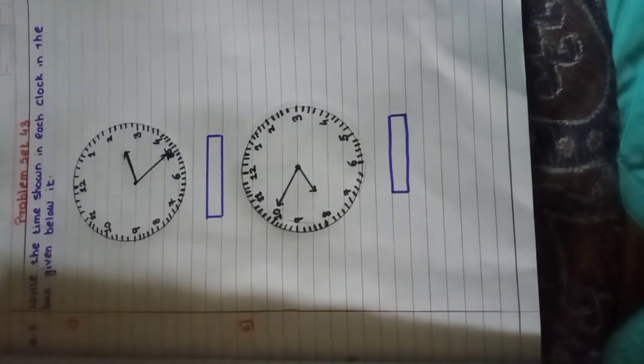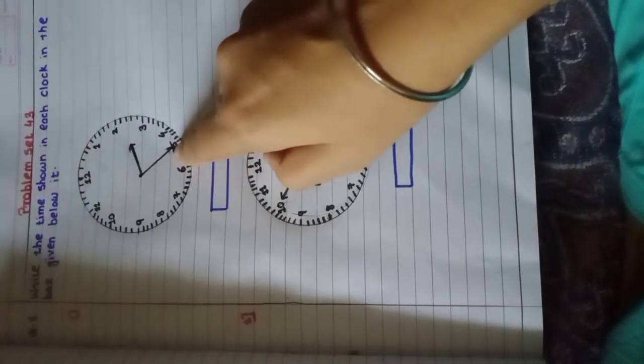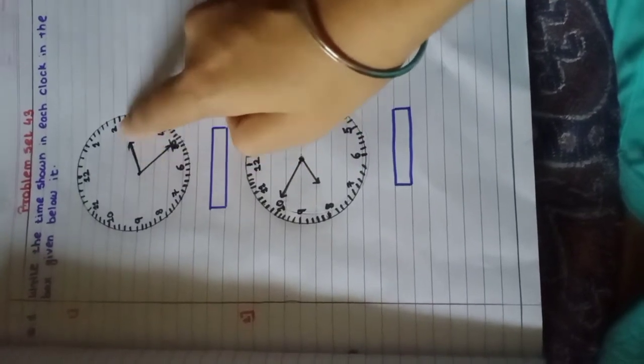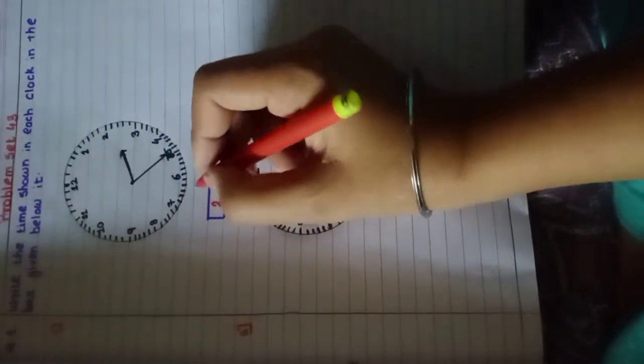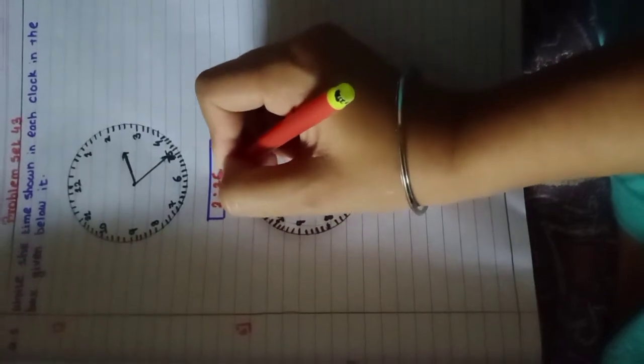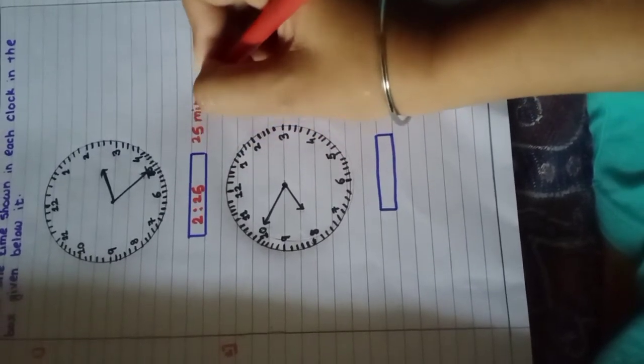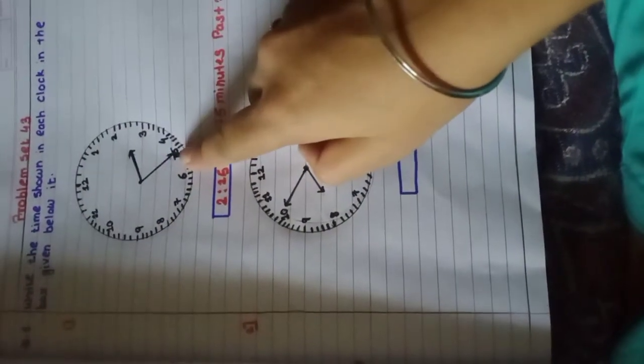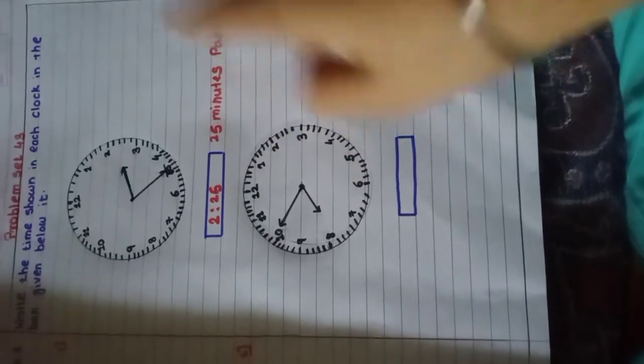Yes, the hour hand is between 2 and 3 and the minute hand is on number 5. So it is 2 o'clock, and it is 25 minutes, because at 5 it is 25 minutes. So how I will write? 2:25, or I can write 25 minutes past 2.